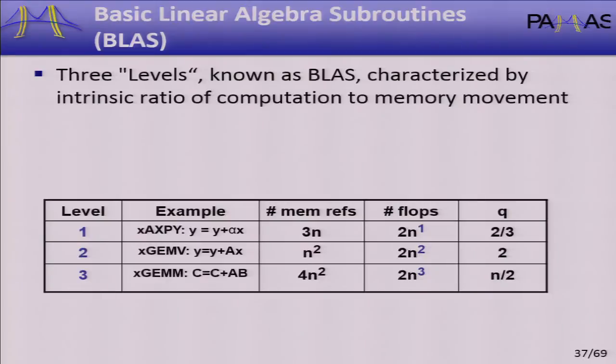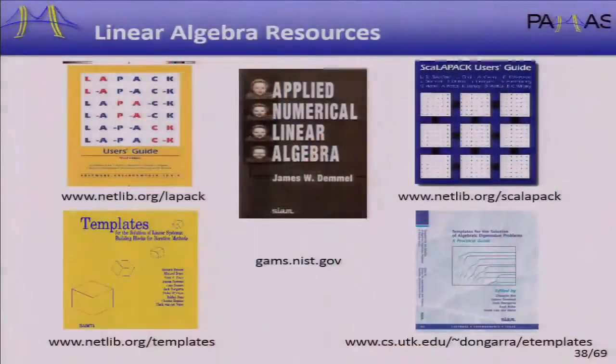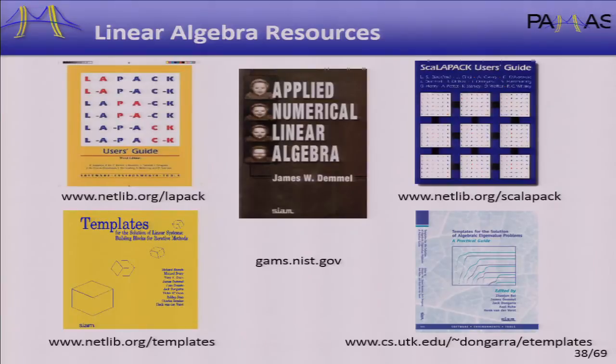Once I know what kind of computation I'm doing, I have a lot of help: books, big software packages, experts I can turn to. If I don't do that simple identification, I either panic or just go in and code matrix-multiply myself. The second will get the job done, but not efficiently. We want to draw on what people already know about that computation.